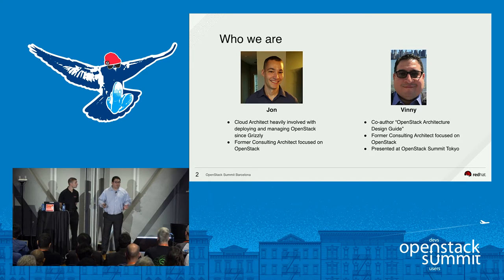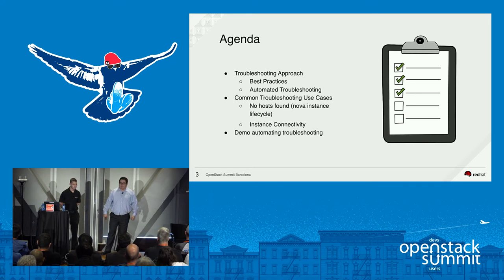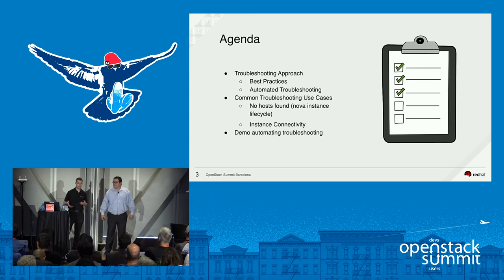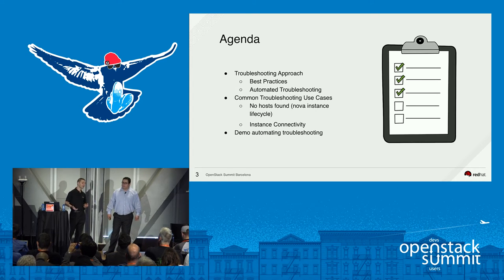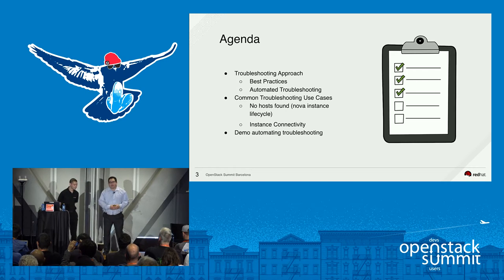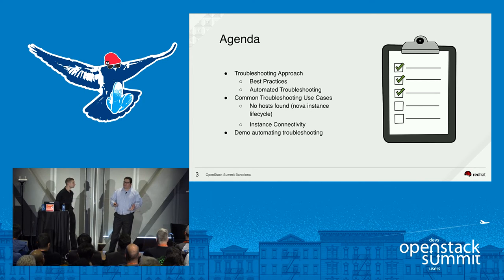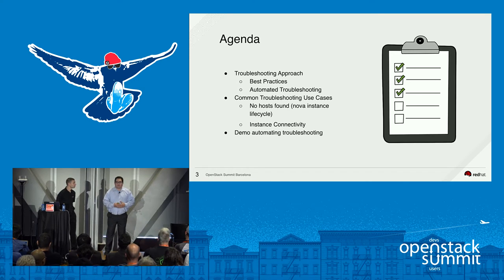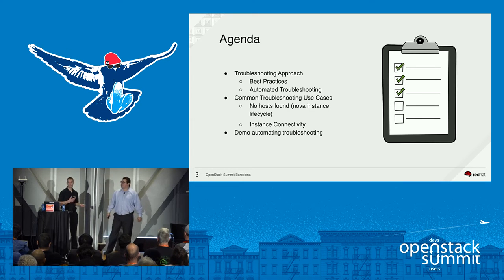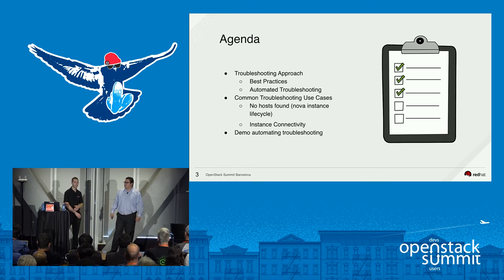There have been a number of sessions on various troubleshooting topics, and we've done our best not to duplicate previous summits. We'll talk about something new we bring to the table. In terms of agenda, we're going to discuss troubleshooting approach and best practices, then focus on how to automate troubleshooting. Then we'll look at two very common use cases: the generic 'no host found' error and instance connectivity in a Neutron environment where you assign a floating IP and can't ping or SSH. Finally, we'll show how to automate that fix.